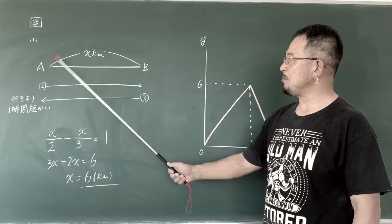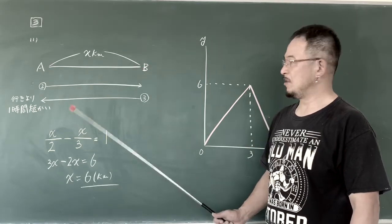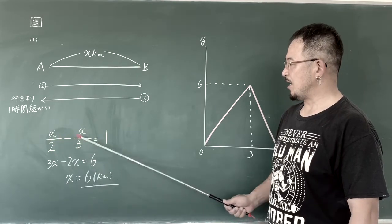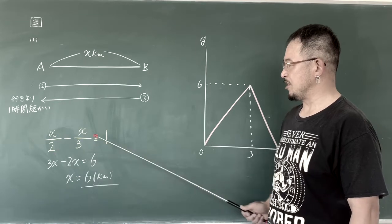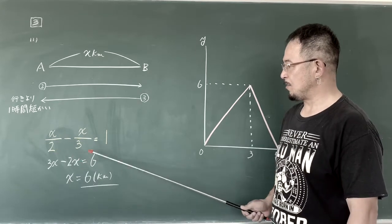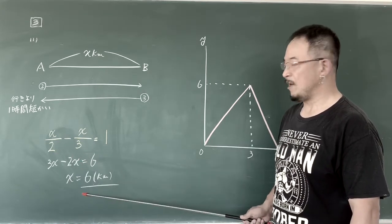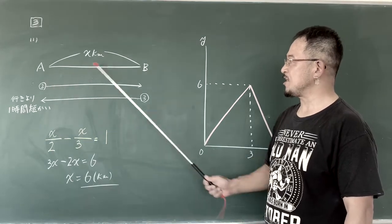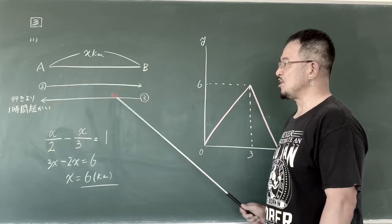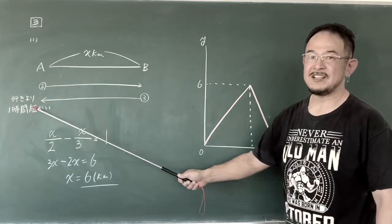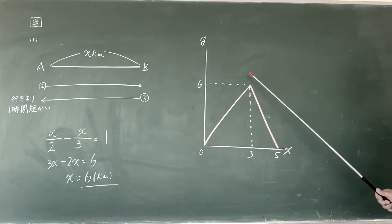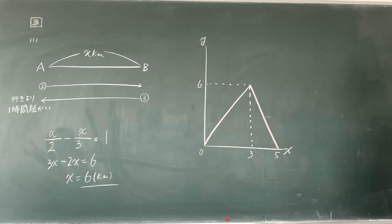行きの速さは帰りの速さより1時間あたりが多いですね。両辺6倍して、エリー間の距離は6キロとわかります。そうすると行きは6割る2で3時間かかって、帰りは6割る3で2時間、1時間短いですね。そしてグラフです。3時間後に6キロ先に行き、2時間かけて戻ったというグラフになります。